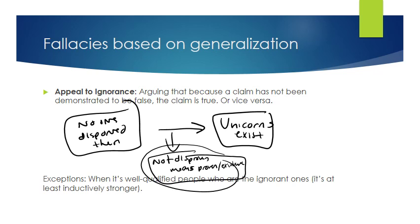The exception to appeal to ignorance is when it's well-qualified people who are ignorant. For example: 'no scientist has proved that unicorns exist, therefore unicorns do not exist' — that's a little bit inductively stronger. We still can't say for certain that unicorns don't exist, but because we're talking about the ignorance of people who are well-qualified and should be able to discover this, the argument is at least a little bit stronger.